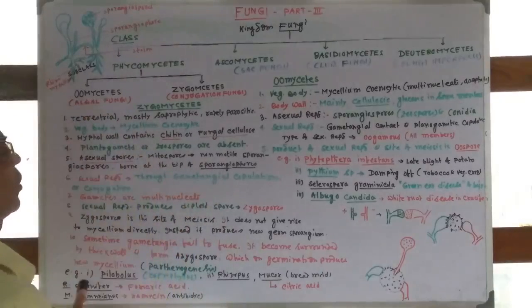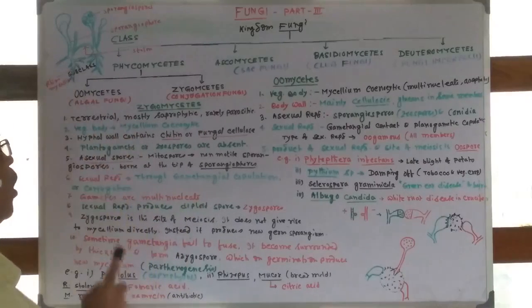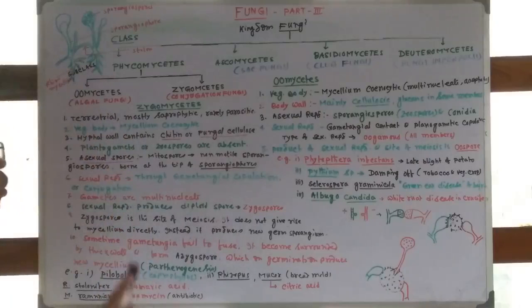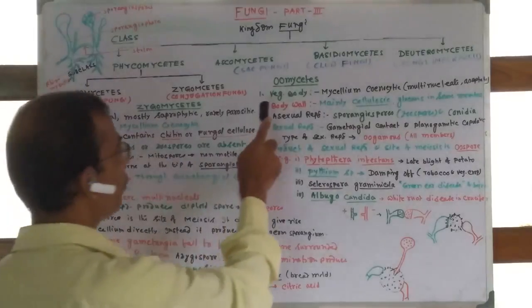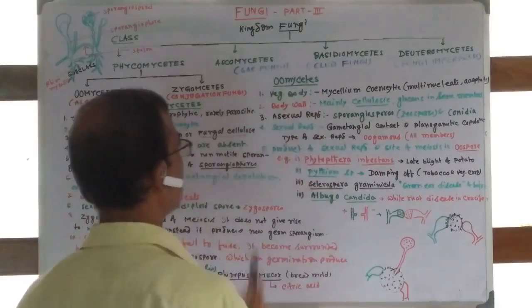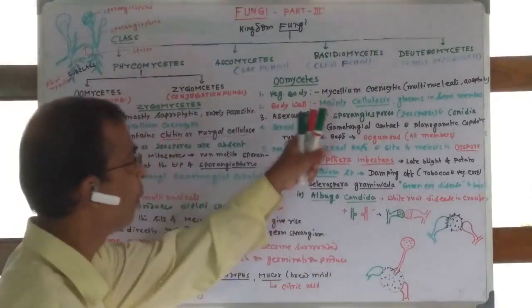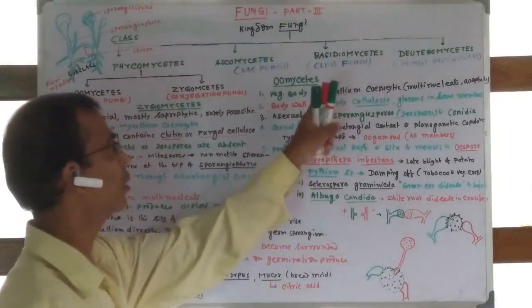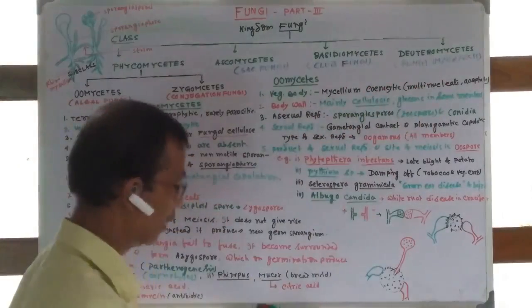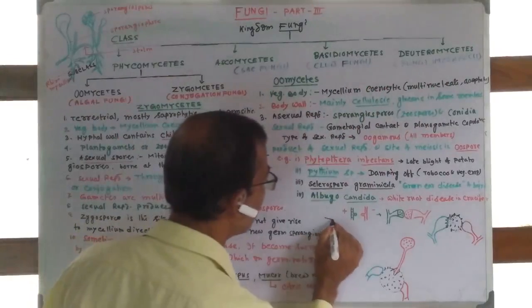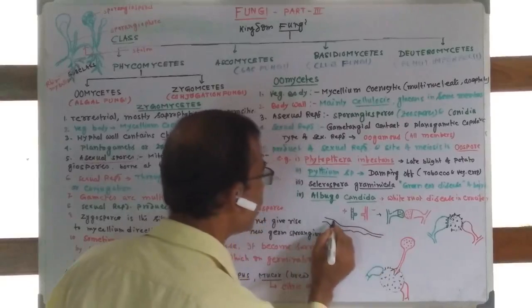Now we will discuss Oomycetes. These are algal fungi because they possess cellulose like algae. The mycelium is coenocytic, meaning there is no septa in the mycelium.